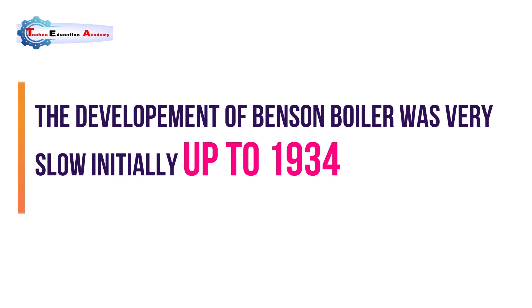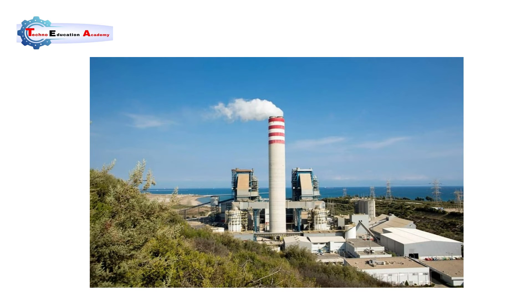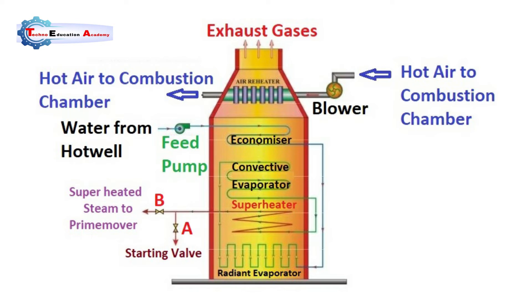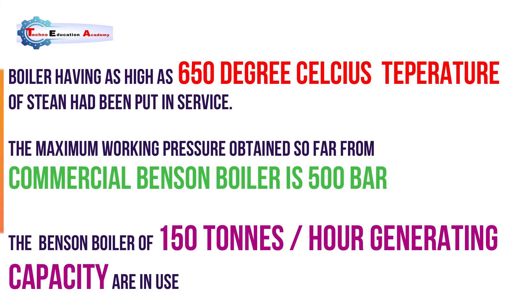The development of the Benson boiler was very slow initially up to 1934. After realization of its advantages, several boilers were built and the post-war era gave special impetus to its development. It has become customary in Germany to install Benson boilers in power stations. Boilers having as high as 650°C steam temperature have been put in service, and the maximum working pressure obtained from commercial Benson boilers is 500 bar. Benson boilers of 150 tons per hour capacity are generally in use.